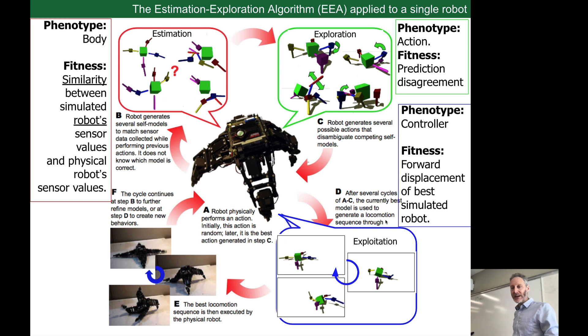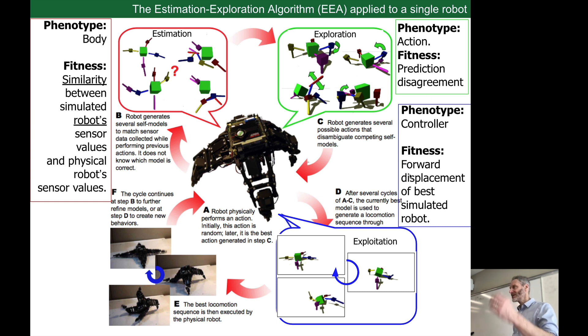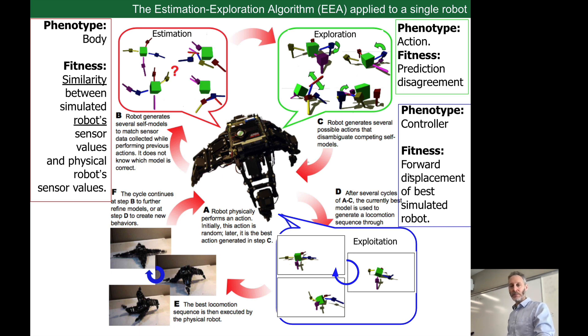Let's go through these quickly and think about the phenotype, genotype, and fitness. The phenotype in the estimation algorithm is the robot's body — it's searching over the space of all possible bodies. The fitness of any one of these models is how closely the virtual sensor data it generates matches the physical sensor data. In the exploration algorithm, the phenotype is an action — rotate one or two motors down and rotate all the others up. Fitness is finding actions that get these models to disagree as much as possible. And for the exploitation algorithm, the phenotype is the neural network controller; fitness, as usual, is forward displacement.